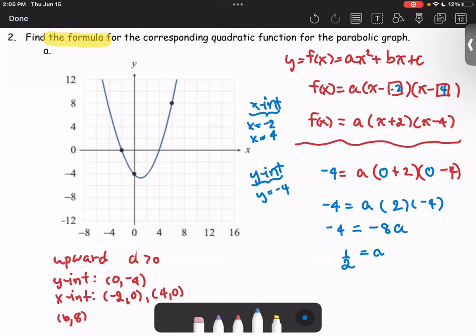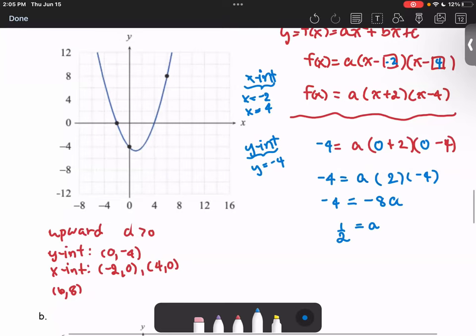Now we have the function in the form of y = f(x) = 1/2(x + 2)(x - 4).